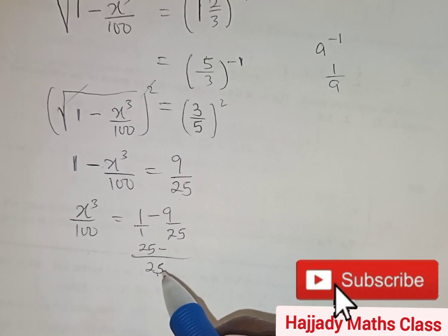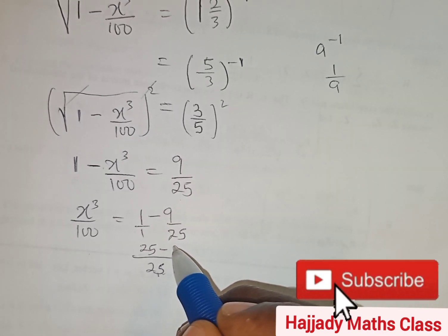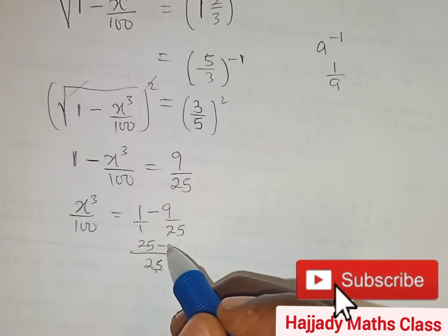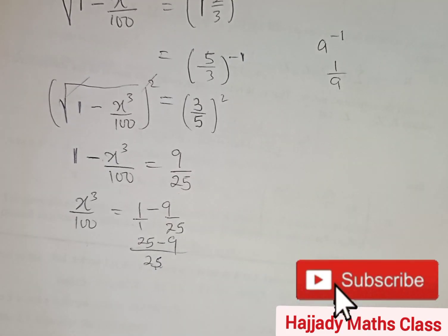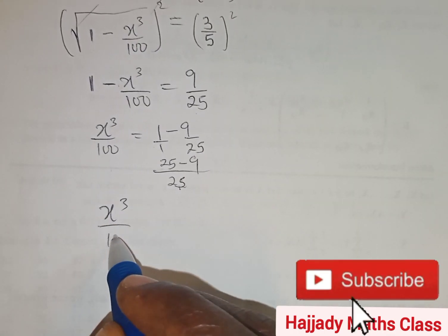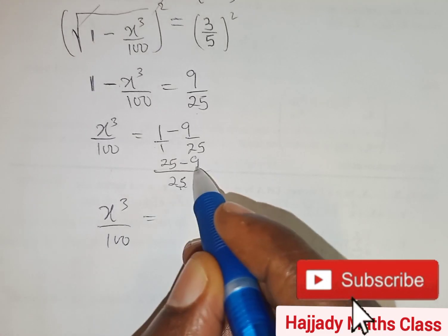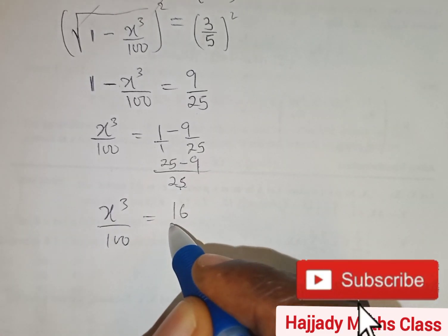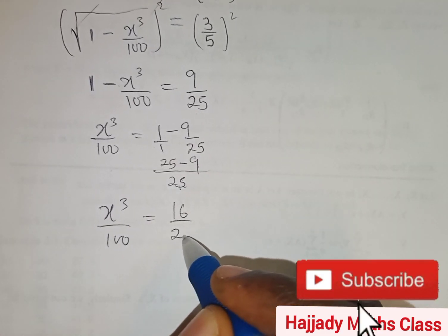25 in 25 is 1 multiplied by 9, we have 9. So with this, we are going to have x raised to power 3 over 100 equal to 25 minus 9 gives 16 over 25.